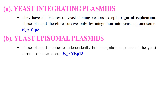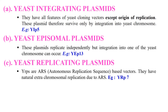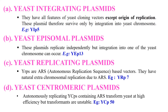The second type is the yeast episomal plasmid (YEp). These usually replicate independently, but some of them integrate themselves into the chromosome. An example is YEp13. Next is the yeast replicating plasmid (YRp) — these are autonomous replicating sequence-based vectors that naturally replicate extra-chromosomally due to the presence of autonomous replication sequences. An example is YRp7. And lastly, the yeast centromeric plasmid (YCp) — these are also autonomously replicating yeast plasmid vectors, and an example is YCp50.